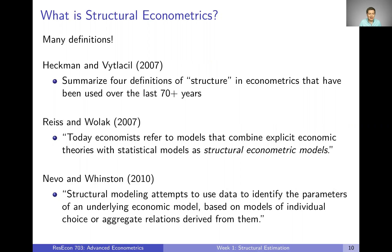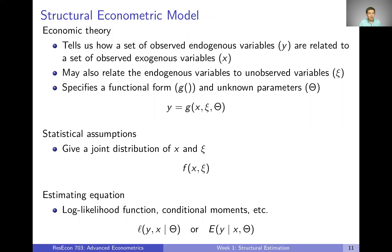Let's dig into the Reiss and Wolak definition — combining explicit economic theories with statistical models. We start with an economic theory that tells us how a set of observed endogenous variables (call them y) are related to a set of observed exogenous variables x. The theory may also relate endogenous variables to some unobserved variables, specify a functional form, and define some unknown parameters — the objects we ultimately want to estimate. We can end up with y as some function g of x, the unobserved variables, and those parameters.